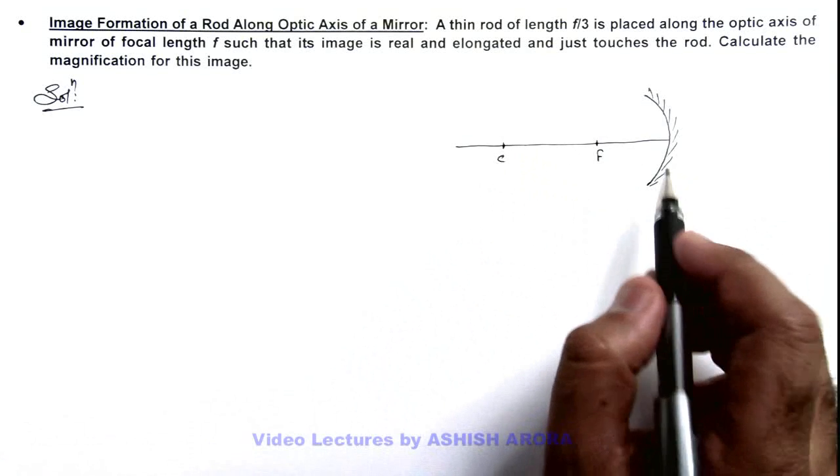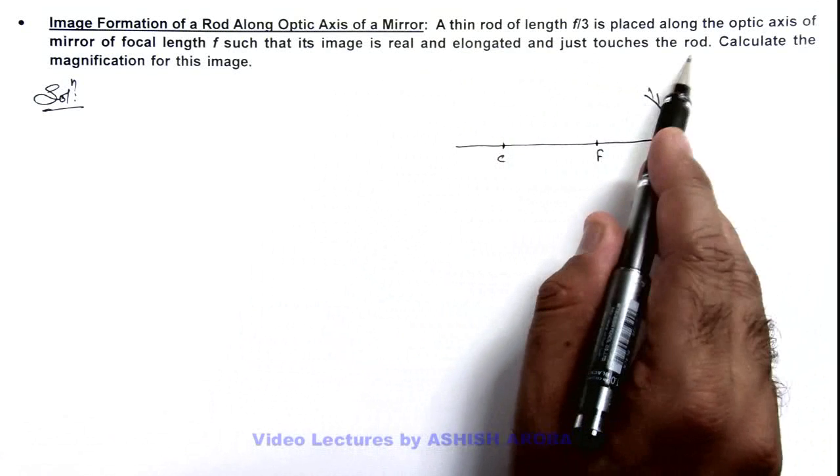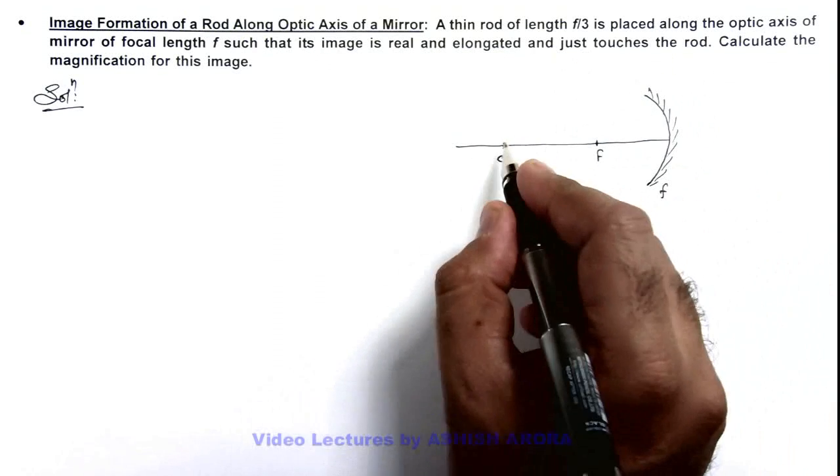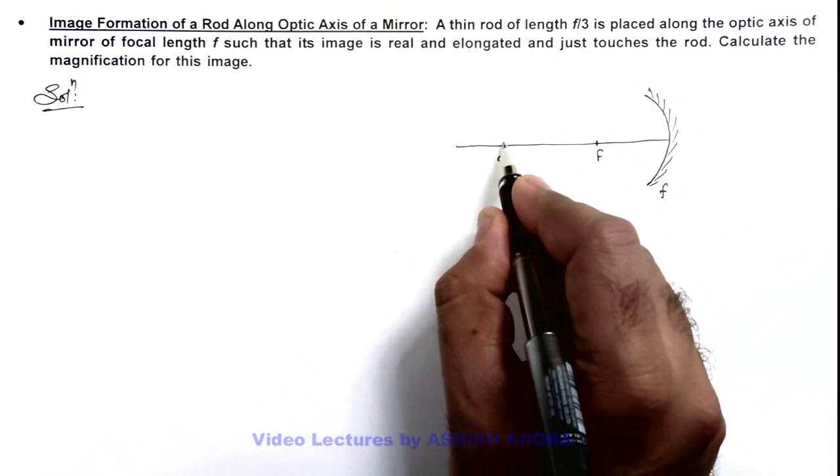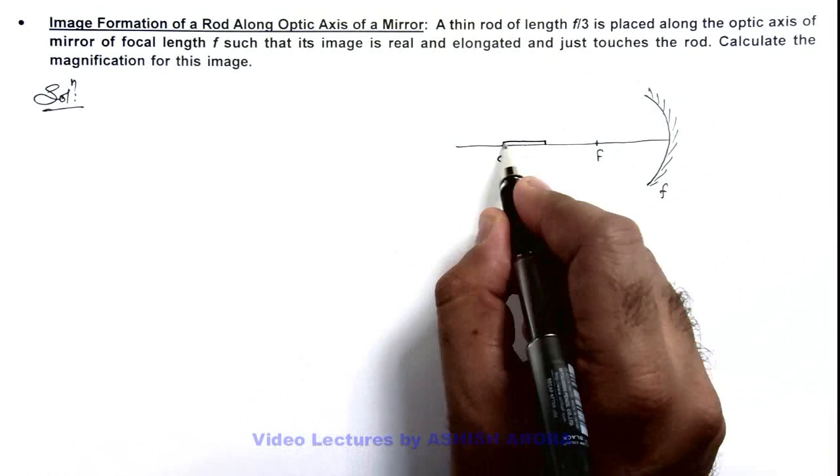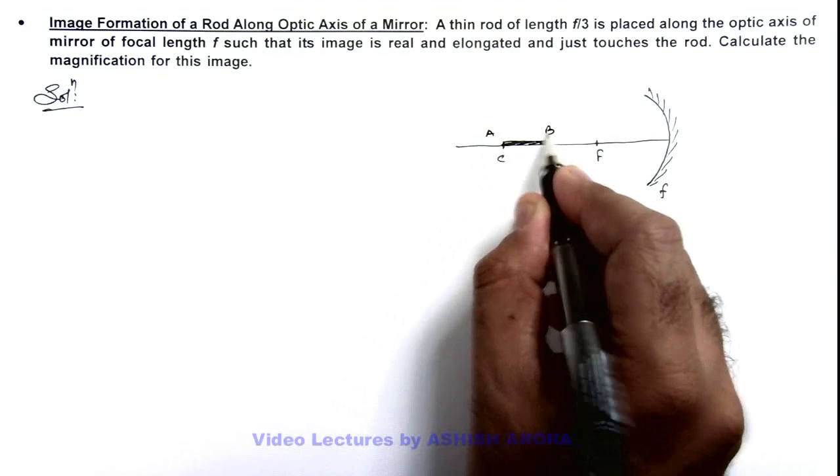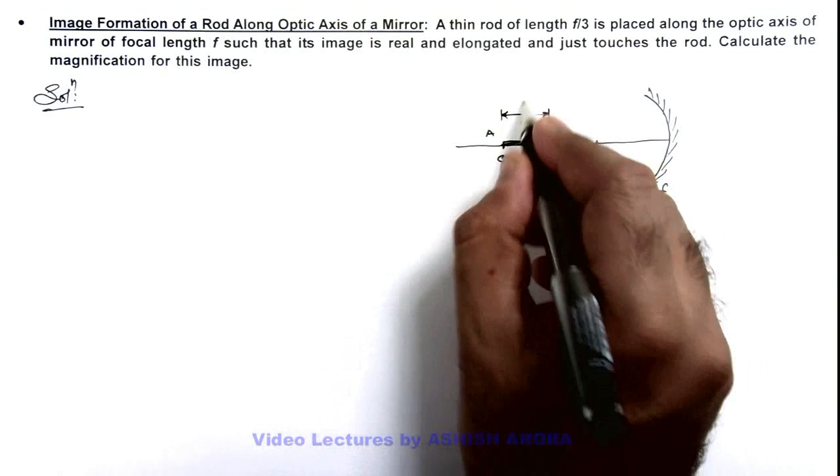Here we are given that the image is real and elongated and it just touches the rod. And it can touch only when the image of a point which is located at center is formed at center only. So here we consider this is the rod AB of which the length is given to us as f by 3.